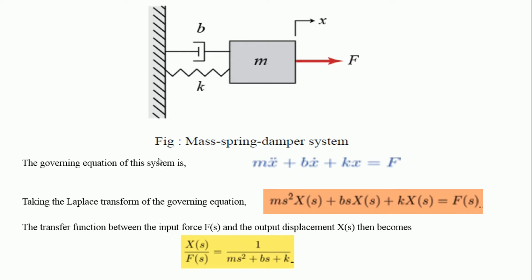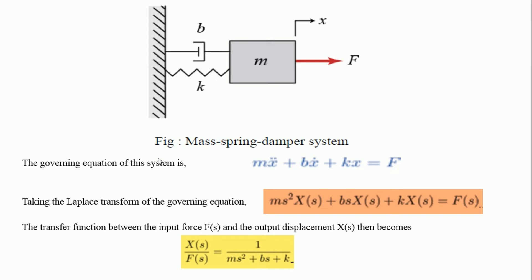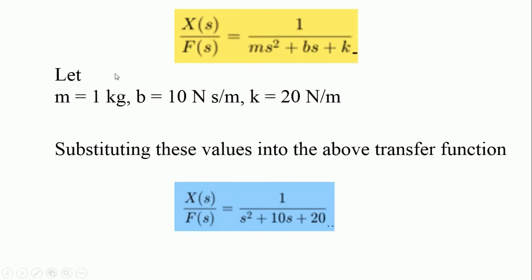Now, to understand the significance of PID controller, we are going to put some values of mass, damper coefficient and spring constant. Now, put m mass is equal to 1, damper coefficient is equal to 10 and spring constant is equal to 20.